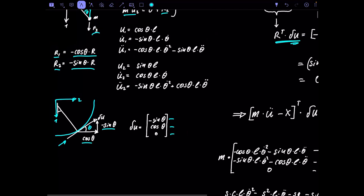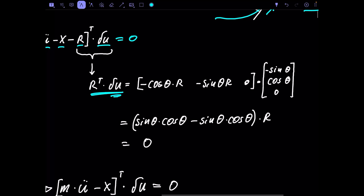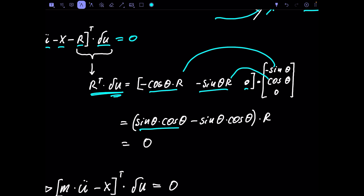Now that we have the reaction forces and the virtual displacements du, we multiply them: the reaction force components are cosine(θ)·r and sine(θ)·r, and the virtual displacement components are -sine(θ) and cosine(θ). Multiplying gives sine(θ)·cosine(θ) minus sine(θ)·cosine(θ), times r — which equals zero. So we confirmed that when we project our forces into the space of virtual displacements, the reaction forces vanish.